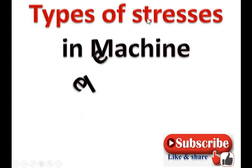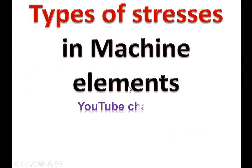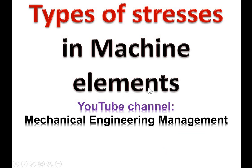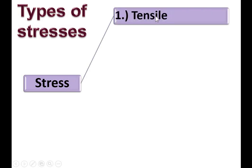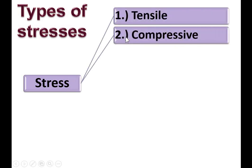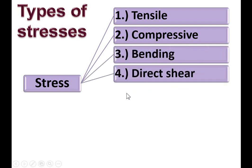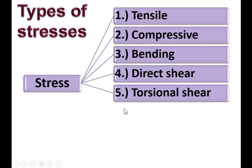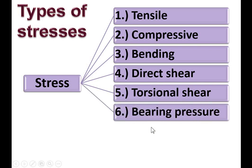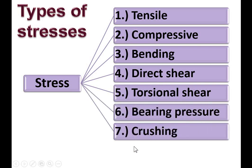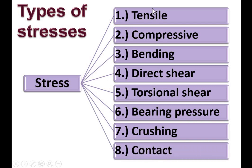Today, we are going to discuss about types of stress in machine elements, or you can say in machine components. We are going to discuss the following types: first, tensile stress; second, compressive stress; third, bending stress; fourth, direct shear stress; fifth, torsional shear stress; sixth, bearing pressure; seventh, crushing stress; and at last, contact stress. These are the different types of stresses we are going to discuss in this video.